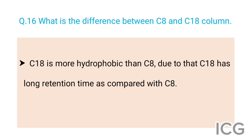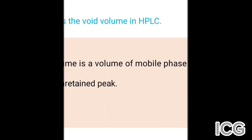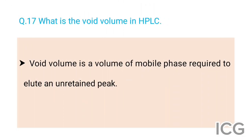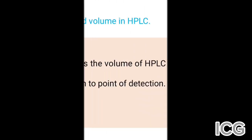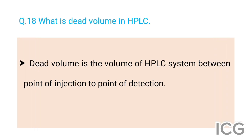The next question is: what is the void volume in HPLC? The answer is void volume is the volume of mobile phase required to elute an unretained peak. The next question is: what is the dead volume in HPLC? The answer is dead volume is the volume of the HPLC system between the point of injection to the point of detection.